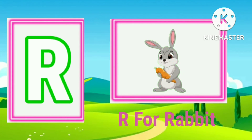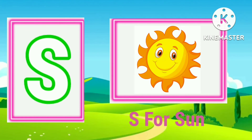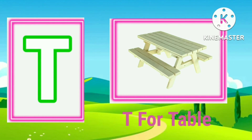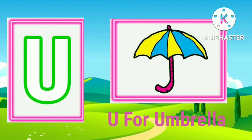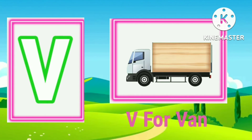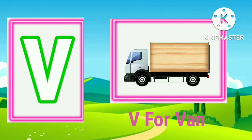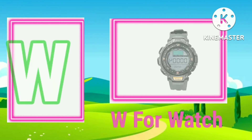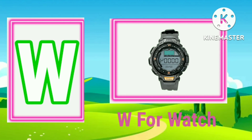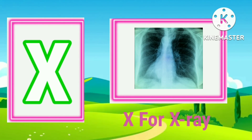R for rabbit. S for sun. T for table. U for umbrella. V for van. W for watch. X for x-ray.